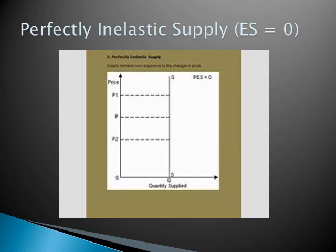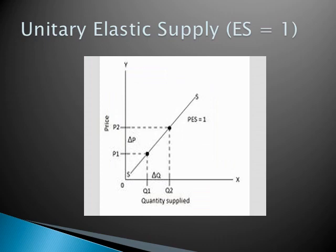Our next point is unitary elastic supply, where elasticity of supply is equal to 1. This means the proportion of change in price will be exactly the same as the change in quantity supplied. In the diagram, if the price increases from OP1 to OP2, the same equal change in quantity takes place — from OQ1 it goes to OQ2. The change in quantity supplied is exactly equal to the proportion of change in price.